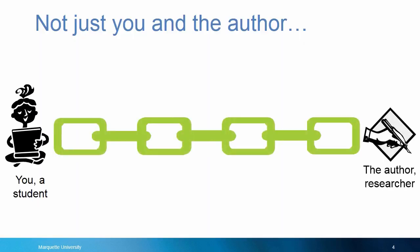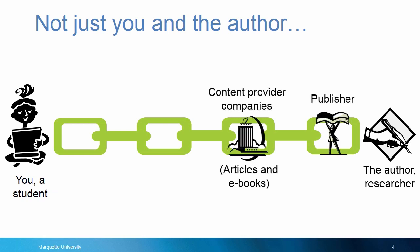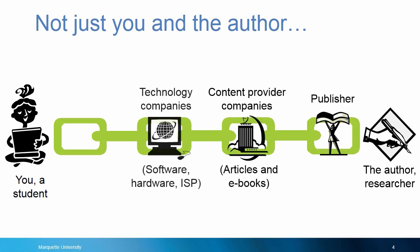First, who are the people and organizations who make up the chain of links that allows you to get the full text? There's the publisher, the content provider companies, and the technology companies that provide the infrastructure for building and hosting databases. Then there's the library that pays for the subscription, and the university or city that funds that library.